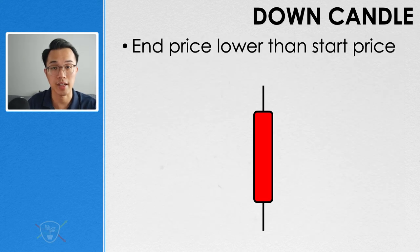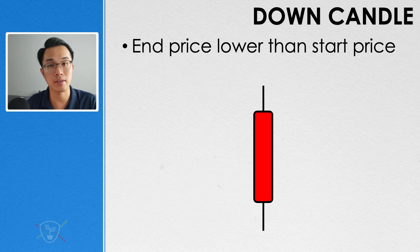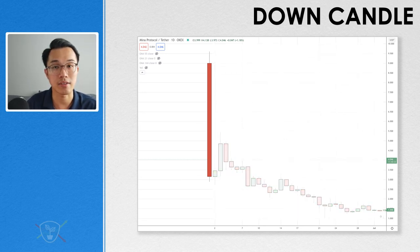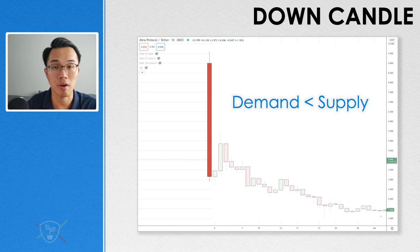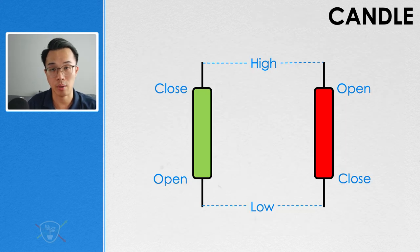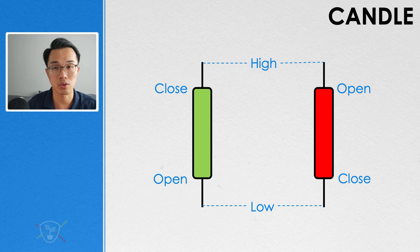When we see a down candle, it tells us the prices moved down during that session. There are days where we see really big red candles, which tells us there was a significant drop in prices — there were far more people looking to sell compared to those looking to buy, and therefore prices fell. Up candles and down candles give us a clear picture of the market direction during those sessions.